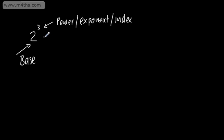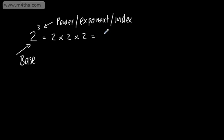I could write 2 to the power of 3 as 2 multiplied by 2 multiplied by 2 — I've simply taken our base and written out 3 of them. If this was 2 to the power of 4 I would need another 2, and 2 to the power of 5, another 2. If we evaluate this, we can write it as 8. In this video, what we're going to do is look at the first two rules of indices, and they are for multiplication and division.